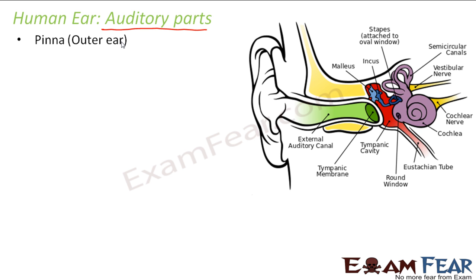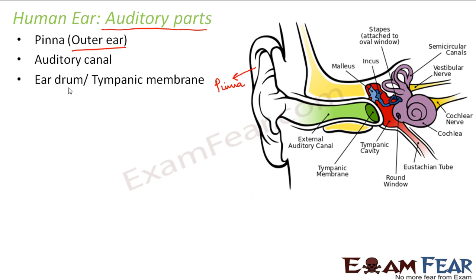The ear is broadly classified into three parts: outer ear, middle ear, and inner ear. The outer ear — the part visible to everybody — is also known as the pinna. Next is the auditory canal, a tunnel-like structure going inside the ear, which you can see if you look at your ear. This auditory canal leads to the tympanic membrane.